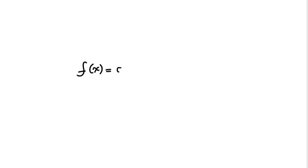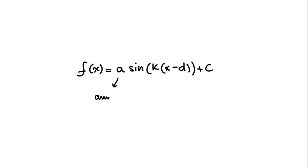Say we have f(x) = a·sine (or cosine) k(x − d) + c. A is the amplitude. Amplitude is the distance from the axis of the curve to the top or the bottom point of the graph — the maximum or the minimum. Amplitude is also responsible for reflection; if it's negative, the graph is reflected in the x-axis or over the axis of the curve.